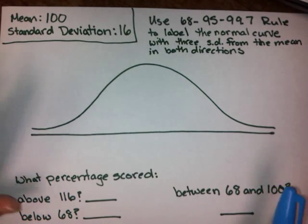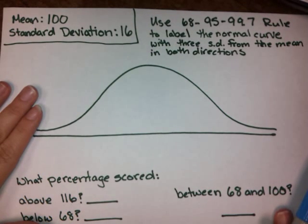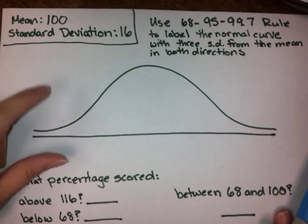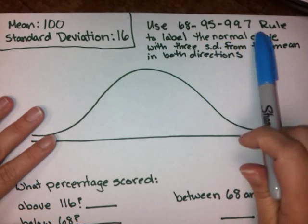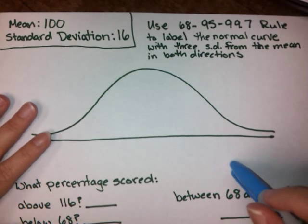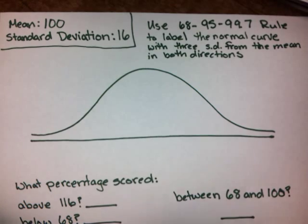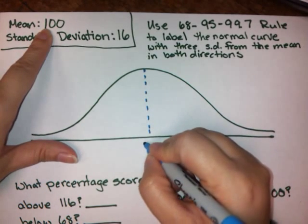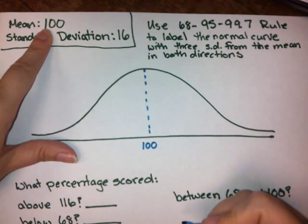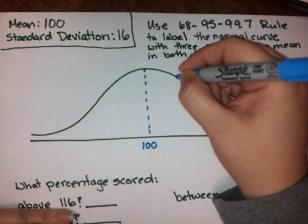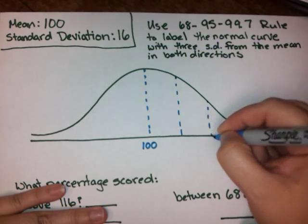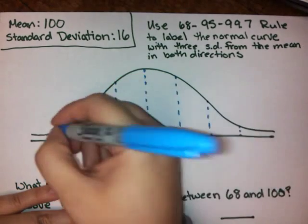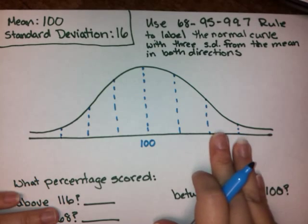We have a set of data — IQ test scores. We're told that the mean is 100 and the standard deviation is 16. We want to use the 68-95-99.7 rule to label this normal curve with three standard deviations from the mean in both directions. The mean falls right in the middle of the curve, so we'll mark that at 100, and then place three standard deviation markers on either side. They don't have to be spaced perfectly, but try to get them fairly even.